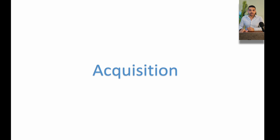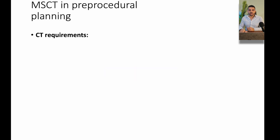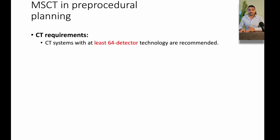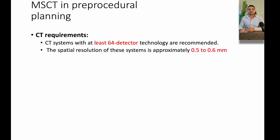The most important thing you have to know in order to make a very good CT analysis is to get a very good CT quality from the beginning. The CT requirements: the system has to be at least 64 detectors — that means 64 slices. The most common now are 128, and more is going to be better. This will give you a slice thickness of 0.5 to 0.6 millimeters, which is sufficient to do adequate measurements. The scan has to include the entire aorta and the iliofemoral vasculature as well.